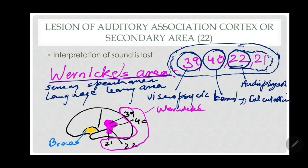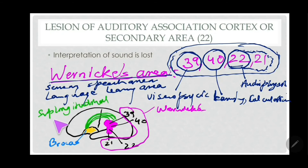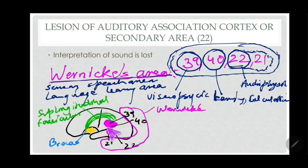Broca's and Wernicke's areas are connected with the help of association fibers — the arcuate fibers, which are mainly the superior longitudinal fasciculus. Now, if any lesion happens in Wernicke's area — whether in the visual-psychic, audio-psychic, or area 40 involving learning memory, mathematical calculation, and past memories — anywhere a problem or injury occurs, you will not be able to speak the correct answer with the given stimulus.